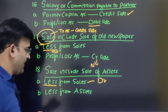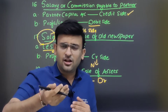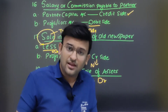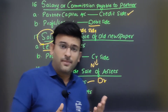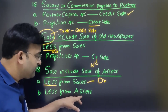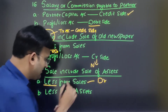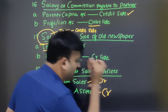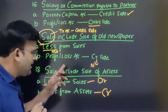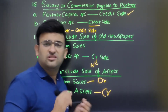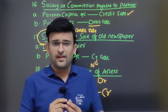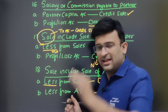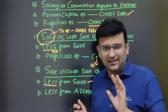The second effect: we need to reduce the asset. Asset was not reduced by the accountant, so we need to do it now — less from asset. Asset has a debit balance, so to reduce it we credit it. Sale includes sale of asset: less from sales, and less from asset.